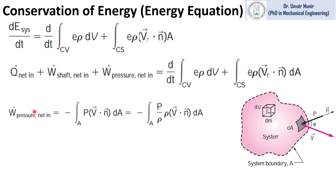Now we define the rate of doing work due to pressure force. Rate of doing work is power, and power equals force times velocity. Multiplying pressure by area gives the force, and multiplying by V dot N — the velocity in the normal direction — gives the velocity component normal to the area in which the pressure force is acting.